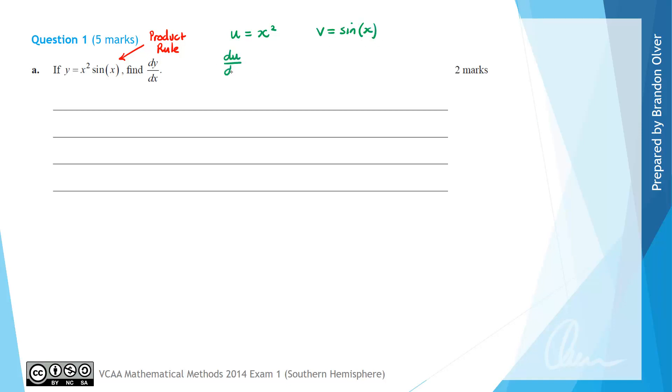Then we calculate du/dx, which is going to equal 2x, and dv/dx, which is going to equal cos of x.